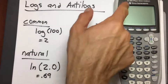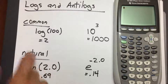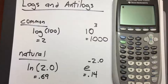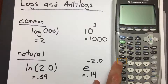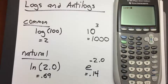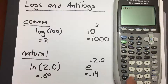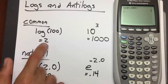For those of you using the TI-84+, to take a common log find the button that says LOG on the left side. Press it and it will show LOG with open parentheses. Enter the number we're trying to take the log of — 100 — close the parentheses, and press enter. We get 2, which is the correct answer.